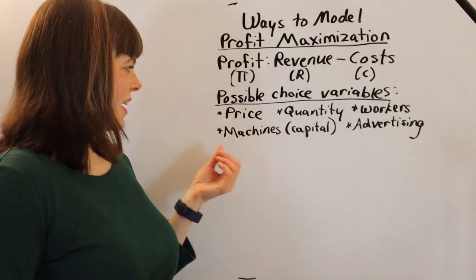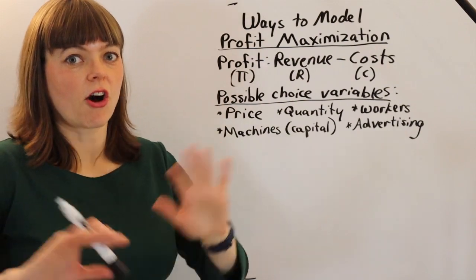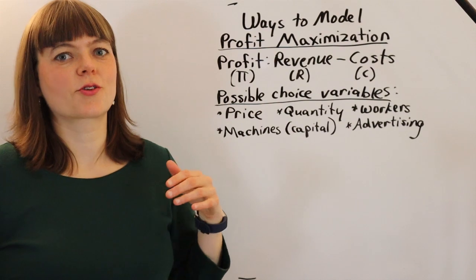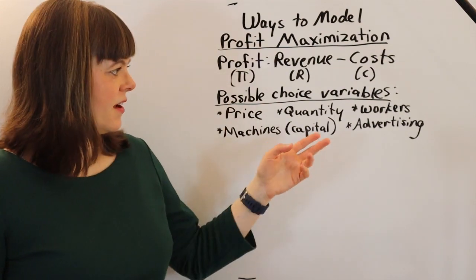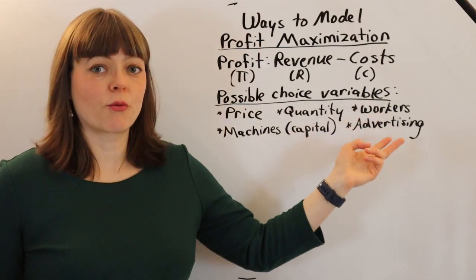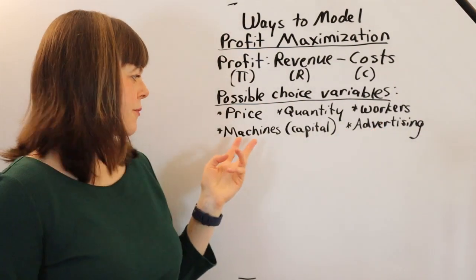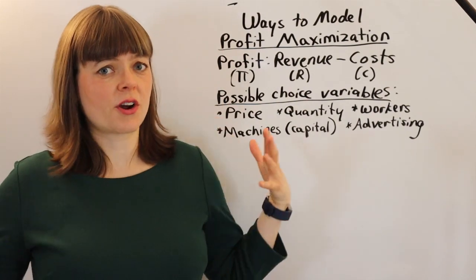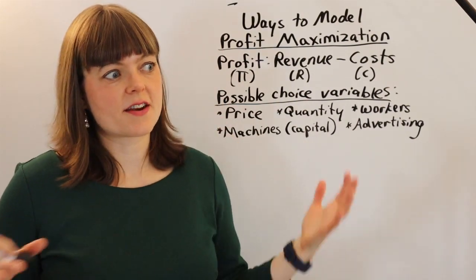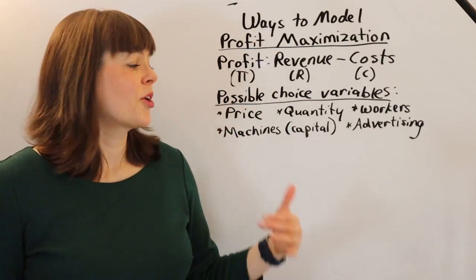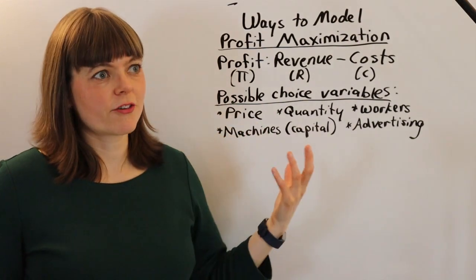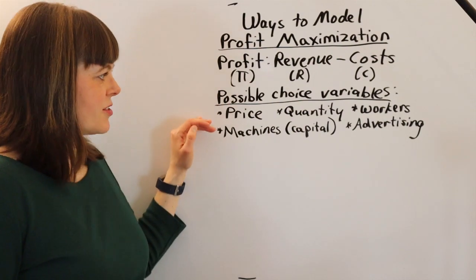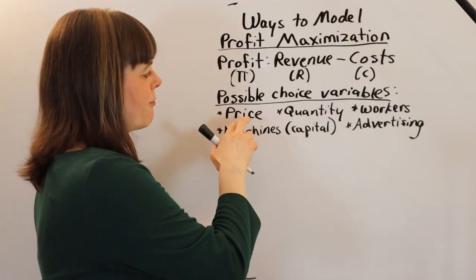Here are some classic choice variables you'll see all over the place in microeconomic theory. The firm could choose price, the firm could choose quantity to produce, the firm could choose how many workers to employ, or how many machines to buy — some version of capital. A lot of the classic models use really one of these four types of choice variables.